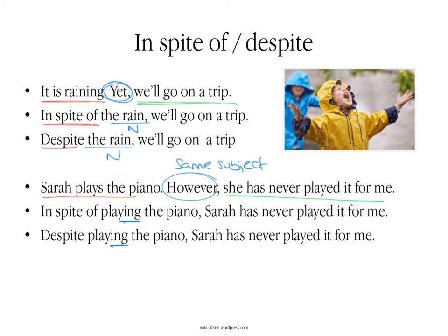If you had a different subject in both sentences, you couldn't express it with the -ing here — it could create a misunderstanding, because people could assume it was the person you're using in the main clause. So you can only use 'in spite of' or 'despite' followed by the verb in the -ing if the subject is the same in both sentences.